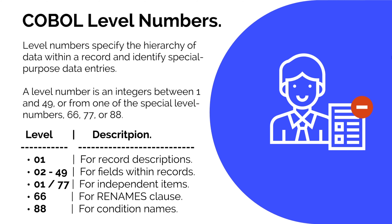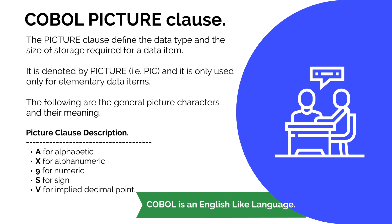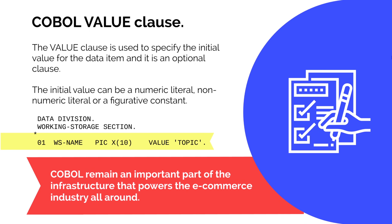The COBOL picture clause is used to define the data type and storage size of a data item. It is denoted by PICTURE or PIC, and it is only used to define elementary data items — never use it on a group variable as it will cause a compilation error. For alphabetic you use A; for alphanumeric you use X; for numeric you use 9; S is used to include a sign to a numeric value; and V is used for an implicit decimal point, which does not take up any storage space.